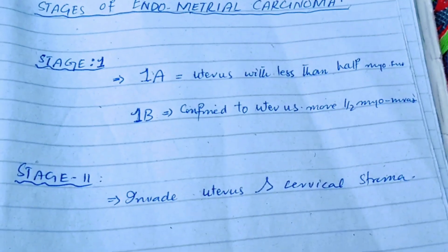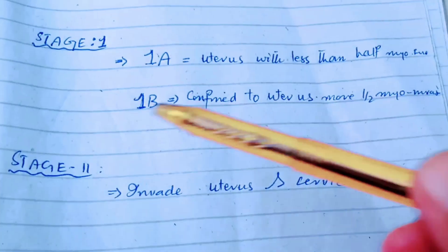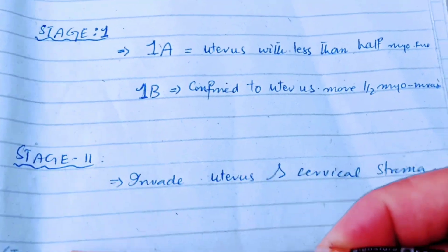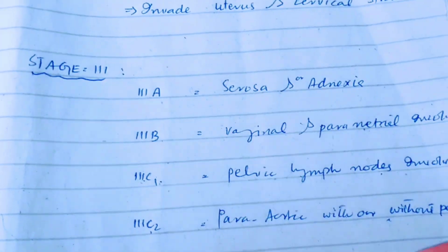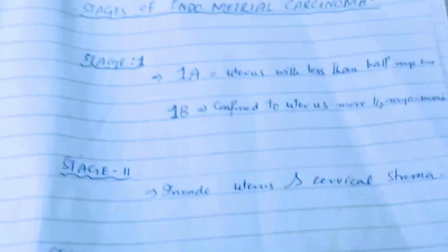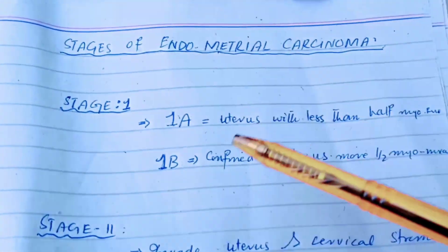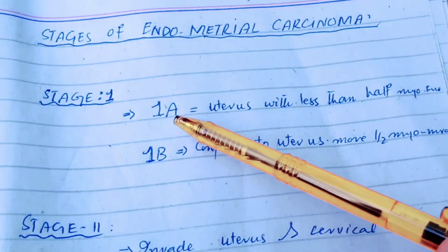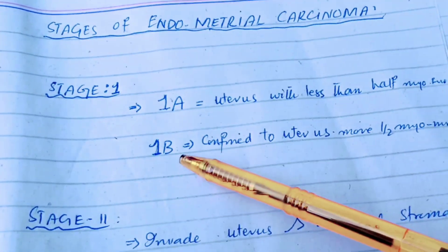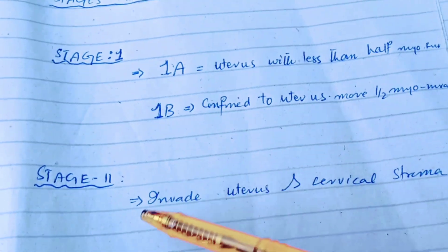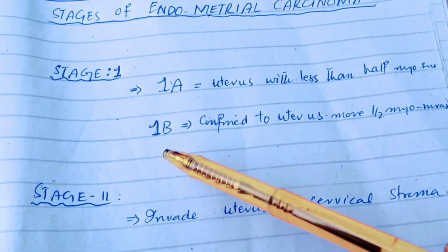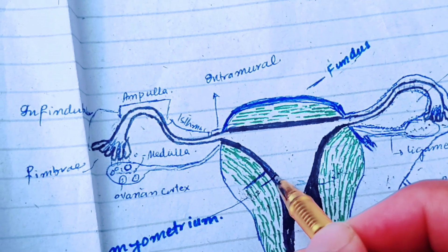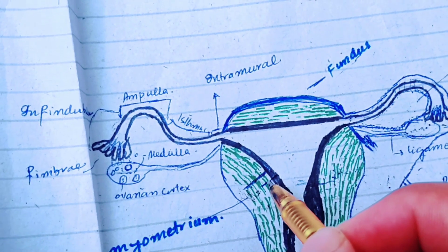The four stages are: Stage 1, Stage 2, Stage 3, and Stage 4. Stage 1 is further divided into Stage 1a and Stage 1b. Stage 1a is when the carcinoma is present in the endometrium and less than half of the myometrium is invaded.